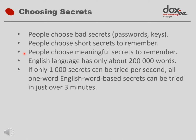People choose meaningful secrets such as names and words, which are easier to remember than random sequences of numbers or letters. The English language has only about 200,000 words in common use. If 1,000 secrets can be tried per second, all one-word English word-based secrets can be tried in just over three minutes. This is one of the reasons why access to sensitive information protected by a password or PIN is usually locked after only three unsuccessful attempts.